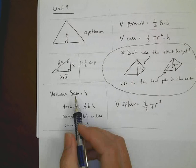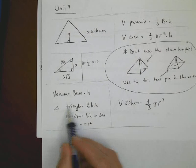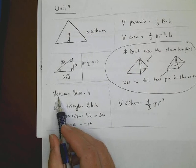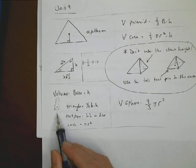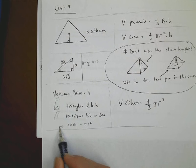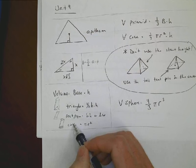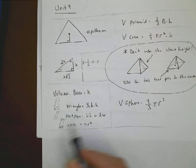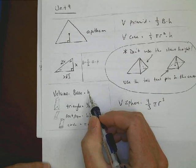Volume is essentially the base of the shape times the height. If you have a triangle, you'd find the base as one-half base times height, and multiply by however tall it is. If you had a square on the bottom, multiply that by the height. If you had a circle bottom, find the area of the circle — pi r squared — and multiply times the height.